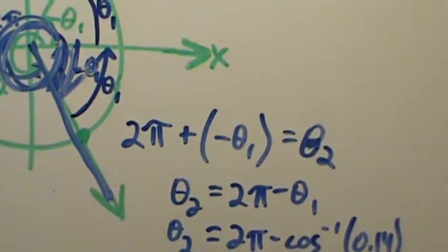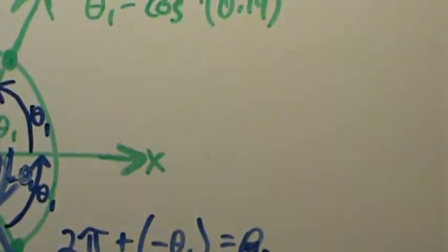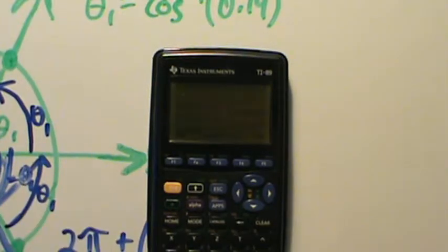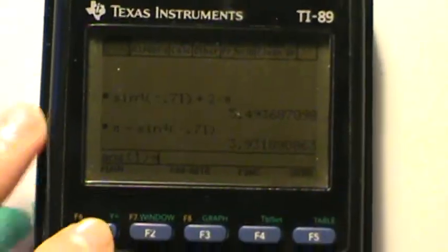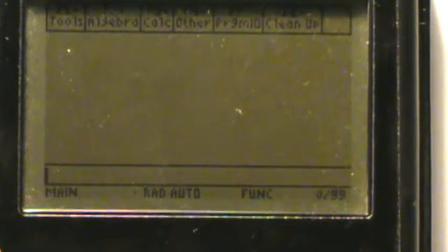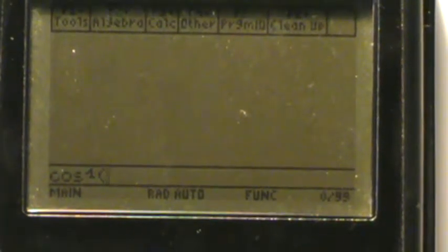So now let's go ahead and toss these into the calculator. So we'll zoom in a little bit here, get rid of these from the other example, and again make sure that we're in the radian mode. So RID for radians, and what we want is the inverse cosine of 0.14, and we also want 2 pi minus that.